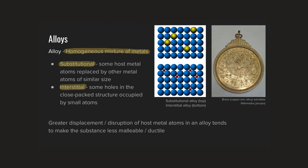We're going to distinguish between a substitutional alloy as opposed to an interstitial alloy. In a substitutional alloy, the host metal — the dominant metal present in the atomic lattice — has some of its atoms replaced by other metal atoms of a very similar size. An example would be brass. You see the picture of that astrolabe made of brass on the right-hand side of our screen. Brass is a homogeneous mixture of zinc and copper in which the host metal copper is very similar in size to the substituting metal zinc, so those zinc atoms fit into the places that would be occupied by copper atoms and don't really disrupt the structure of the crystalline lattice.